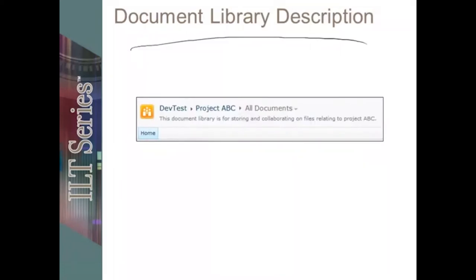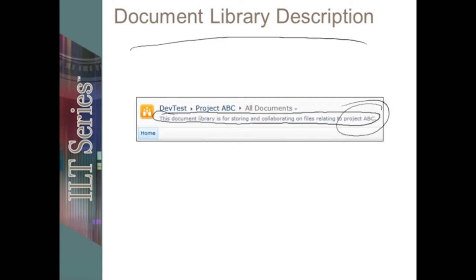For the document library description: when you add a description, it will show up below the breadcrumb navigation. It's helpful to fill this out so that end users know it's the replacement area or everything related to Project ABC, whatever the information is. Just be aware that if you use the description, the user will see it — so make sure it's appropriate, or leave it blank.